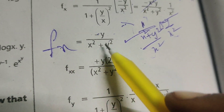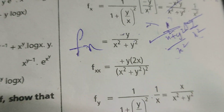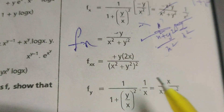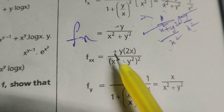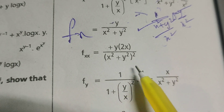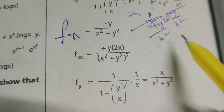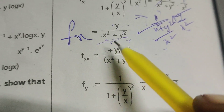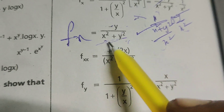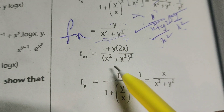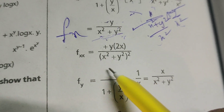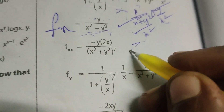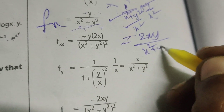Now again differentiating fx with respect to x, y is the constant. We have minus y into 1 by x square plus y square. Considering x square plus y square as x, the formula gives minus 1 by x square, so differentiation gives minus into minus, plus y into 2x by x square plus y square whole square. Therefore fxx equals 2xy by x square plus y square whole square.